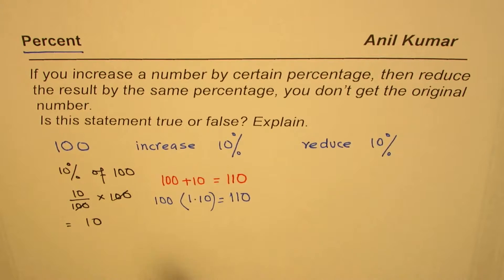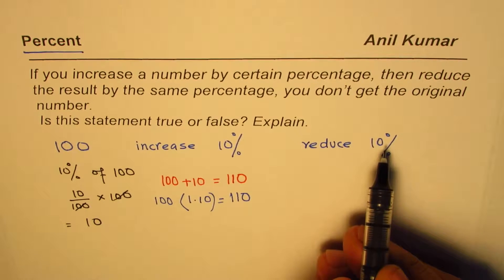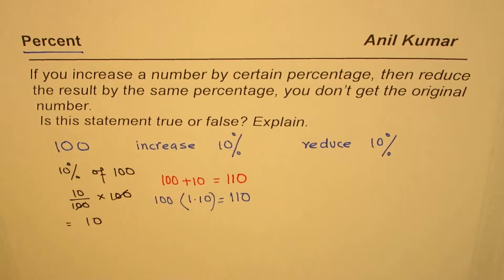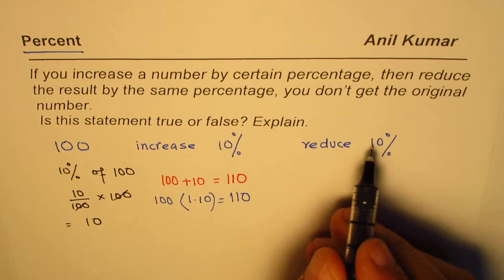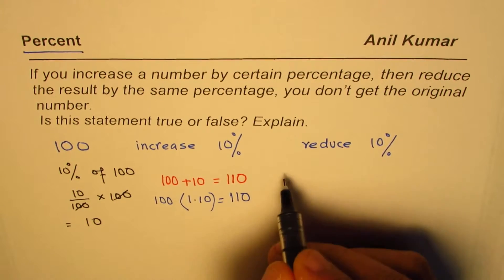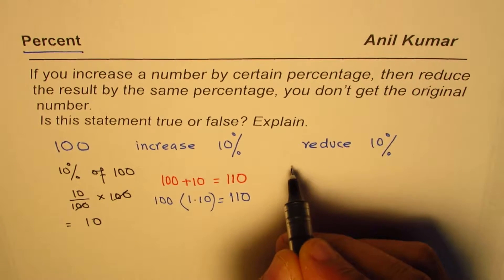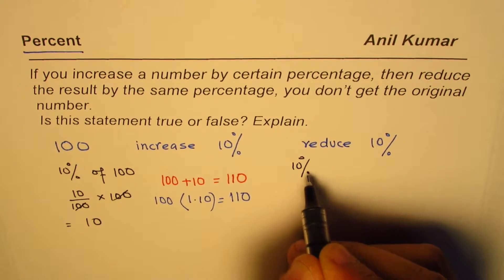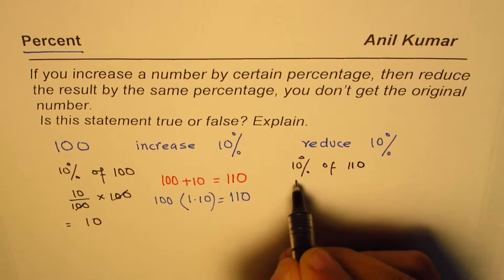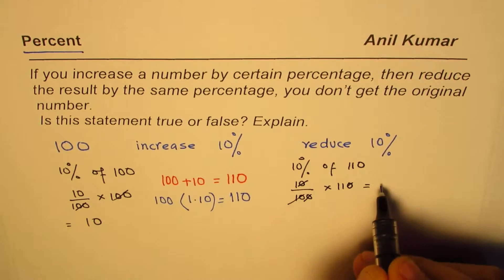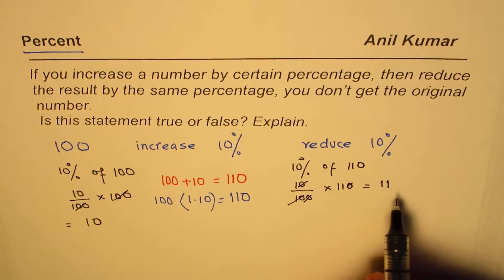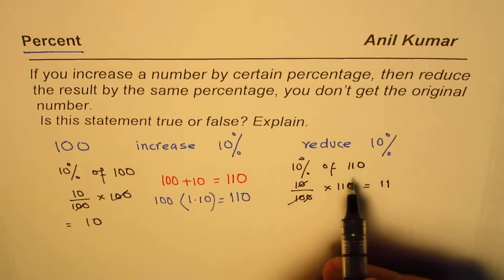But remember, we are not reducing 100 now, we are reducing 110. This result reduced by 10 percent really means 110, so 10 percent of 110—that means 10 out of 100 times 110. This 0 cancels, we are left with 11.